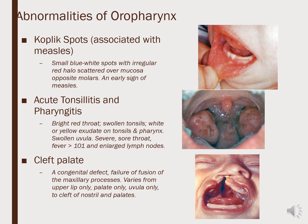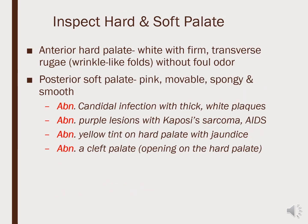Some abnormalities of the oropharynx include Koplik spots with measles, tonsillitis, and pharyngitis. The anterior hard palate is in the front and the posterior soft palate is in the back. Candidal infection can occur anywhere in the mouth. Purple lesions in the buccal mucosa or on the palate may be related to Kaposi's sarcoma or AIDS. A yellow tint to the buccal mucosa can be seen with jaundice. Cleft palate is a developmental issue that occurs in utero.